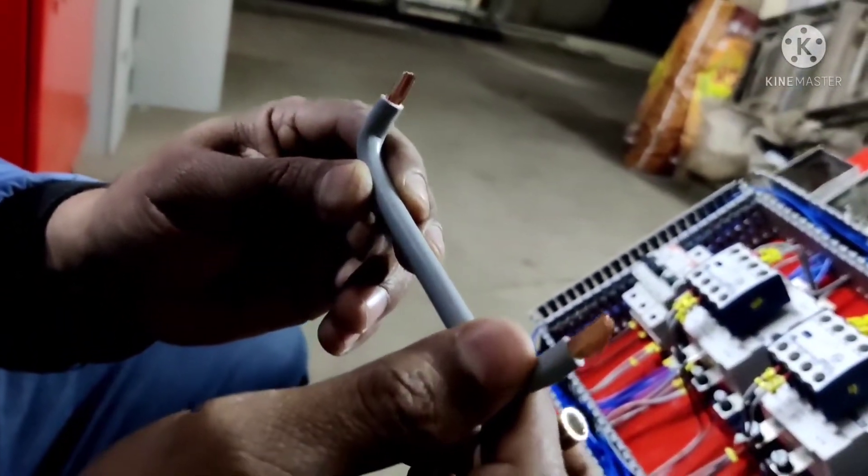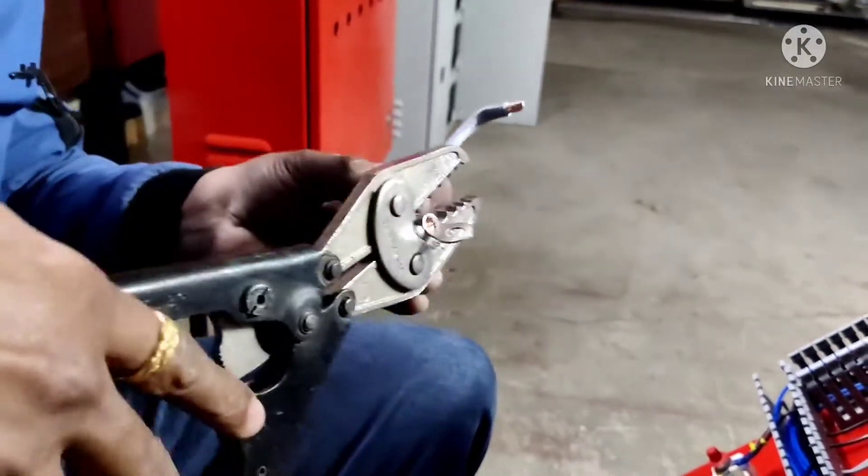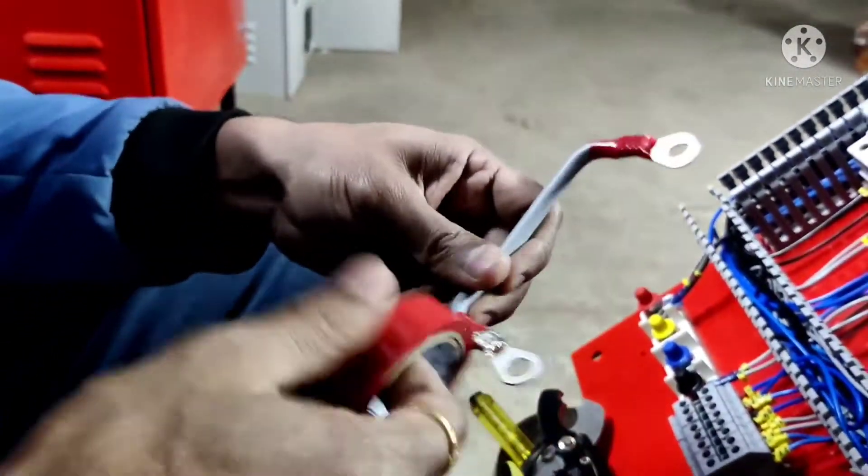With cables cut in size, lugs crimped tightly, and color coding is done with insulation tape.